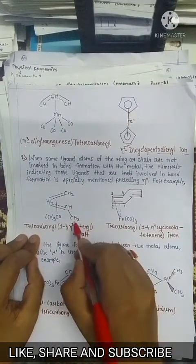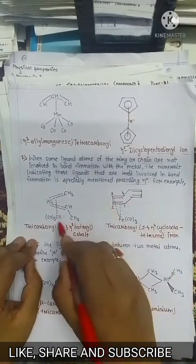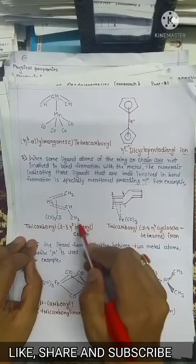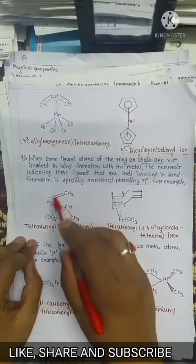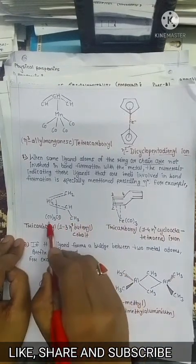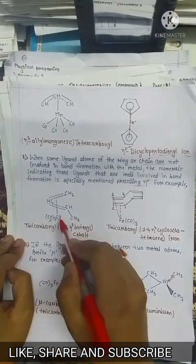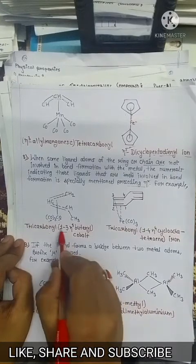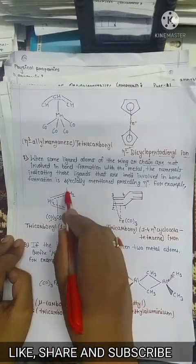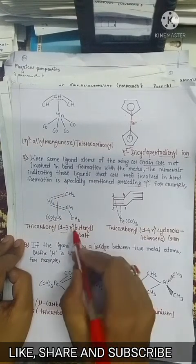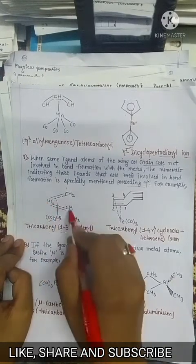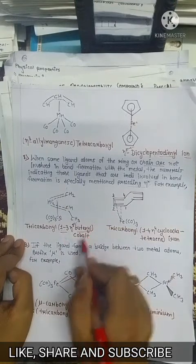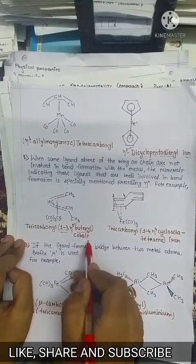When some ligand atoms of the ring or chain are not involved in bond formation with the metal, the numerical superscript on η indicates only those ligands involved in bonding, and the specific carbon positions are mentioned preceding the η. Just see — in this case, cobalt is attached only to 3 carbon atoms, even though the moiety contains 4 carbon atoms. The cobalt is also attached to 3 carbonyl groups, so that gives tricarbonyl, and since cobalt bonds to only the 1st, 2nd, and 3rd carbons, it is written as 1,2,3-η³-butenyl cobalt.